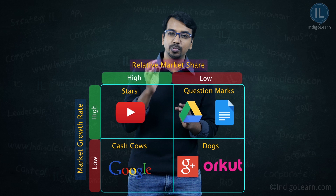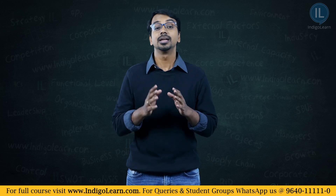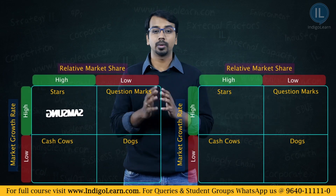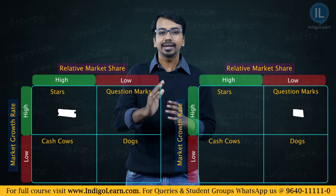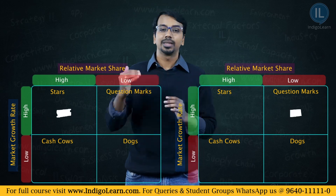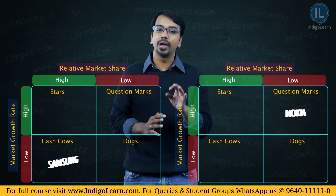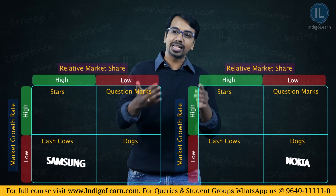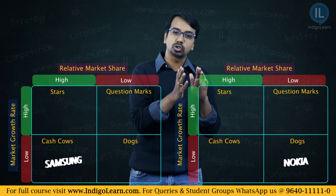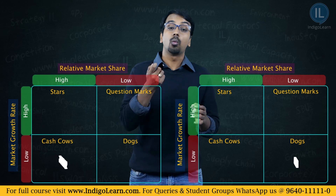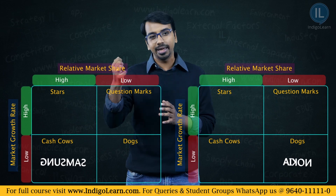Another example to understand the BCG matrix is the market share of Samsung versus Nokia in the smartphone market. When the smartphone market started showing a higher growth phase, Samsung had a relatively high market share while Nokia had a relatively low market share. Samsung could convert its smartphone business into a cash cow by retaining a higher market share, whereas Nokia eventually became a dog — as the market became mature, Nokia could not increase its market share. Low growth and low market share made it a dog and eventually it sold off its business to Windows.